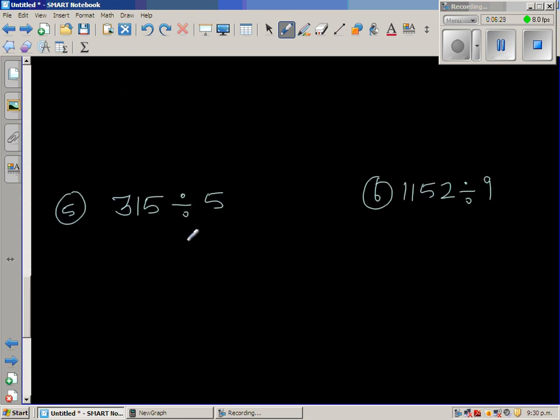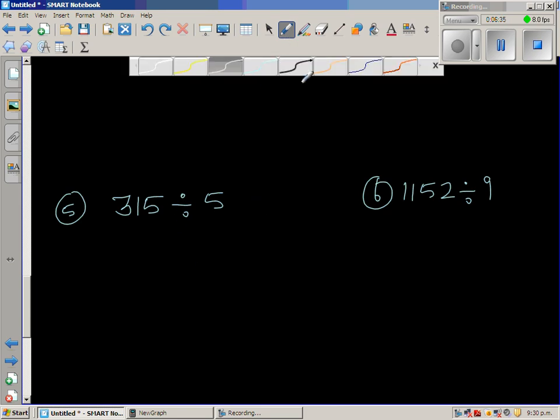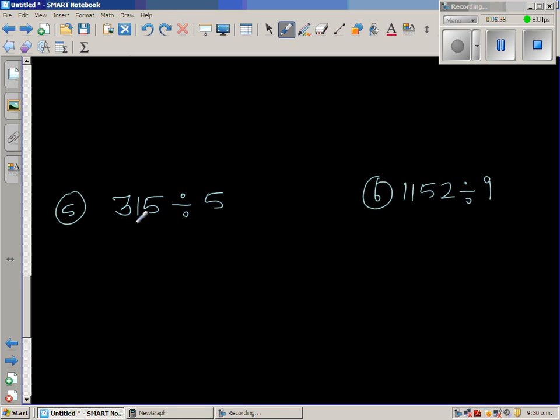Let us look at one more question. 315 divided by 5. Here I'm going to do a different strategy. I'm going to double both the numbers. When you're dividing by 5, it's pretty easy. You can double both the numbers. So this is 630 divided by 10. This is a method called doubling. And if you double this, you have to also double this. So the answer is 63.